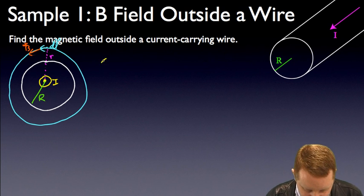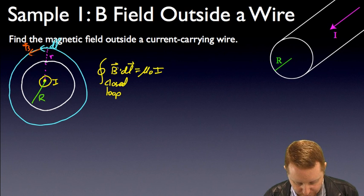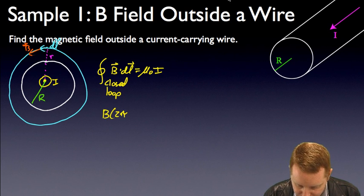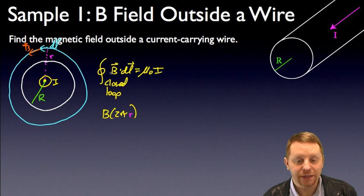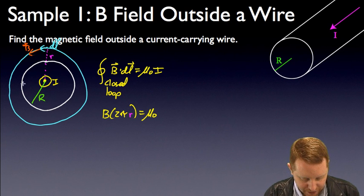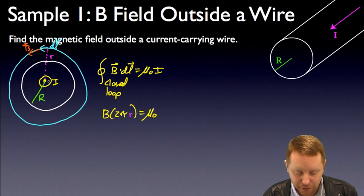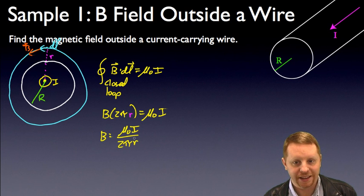Applying Ampere's law, the integral over the closed loop of B dot dl equals μ₀ times i. The left hand side, outside the wire, is just going to be B times 2π times our little r. B dot dl is just going to be B times that length because they're in the same direction anywhere on that path. That must equal μ₀ times the current that penetrates that closed loop, which is just i. So B equals μ₀i over 2πr, which of course we already knew, but how much slicker a derivation is that compared to Biot-Savart law?